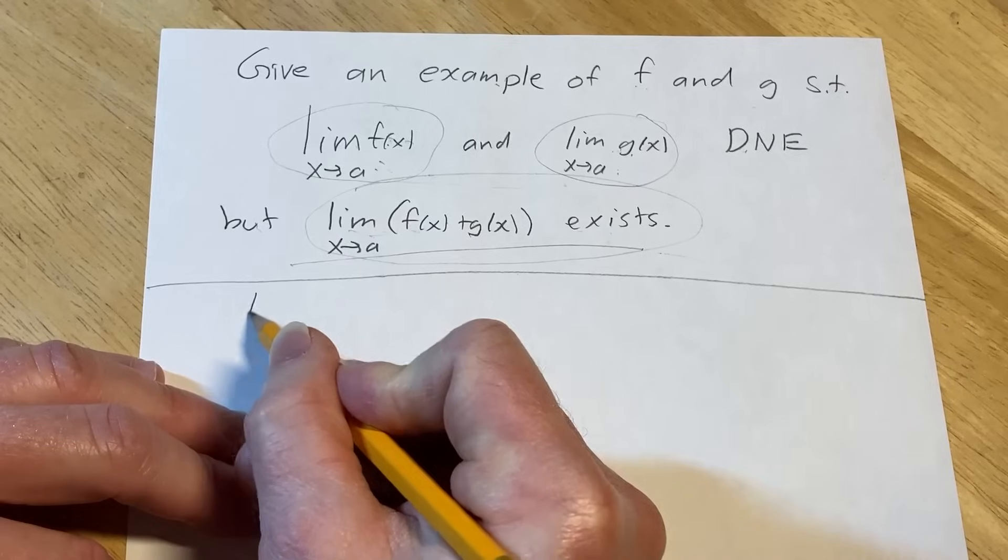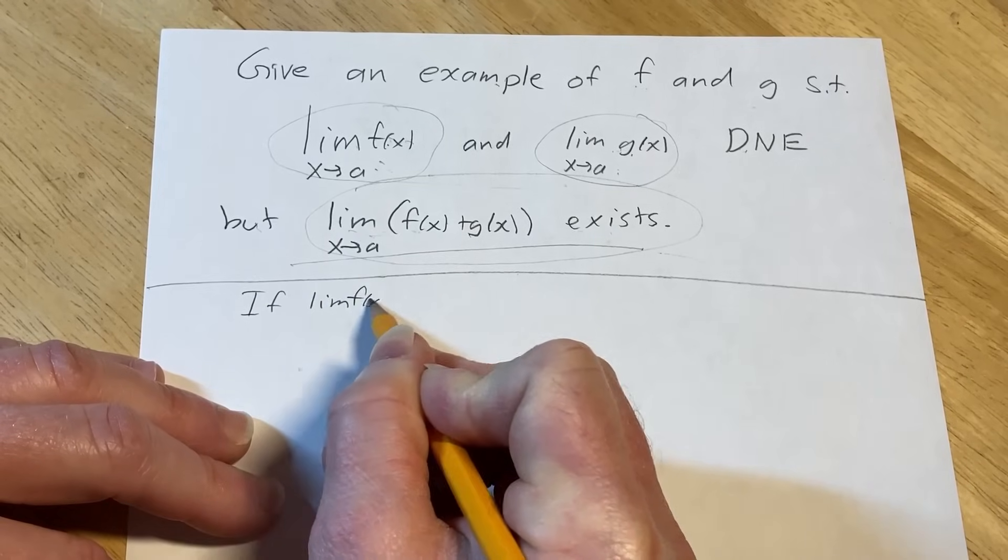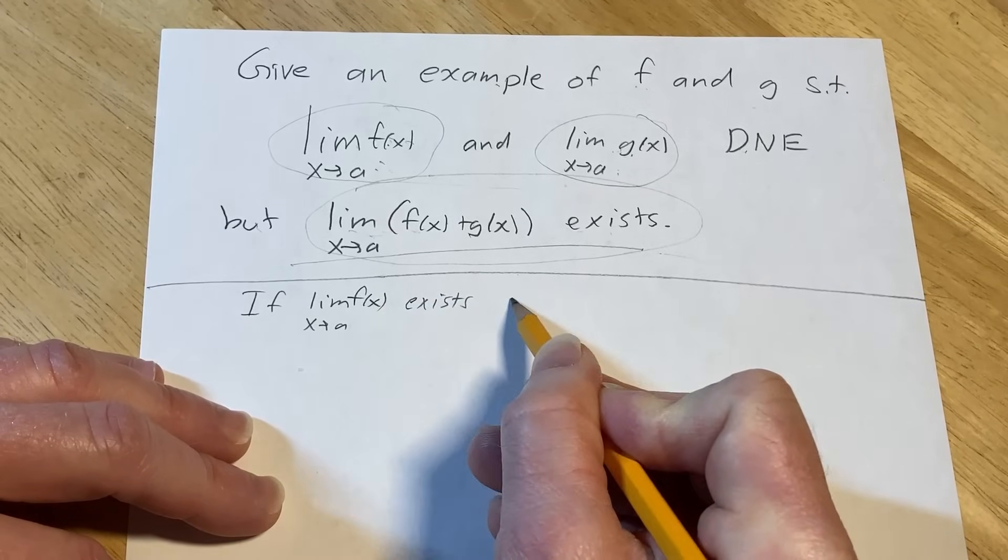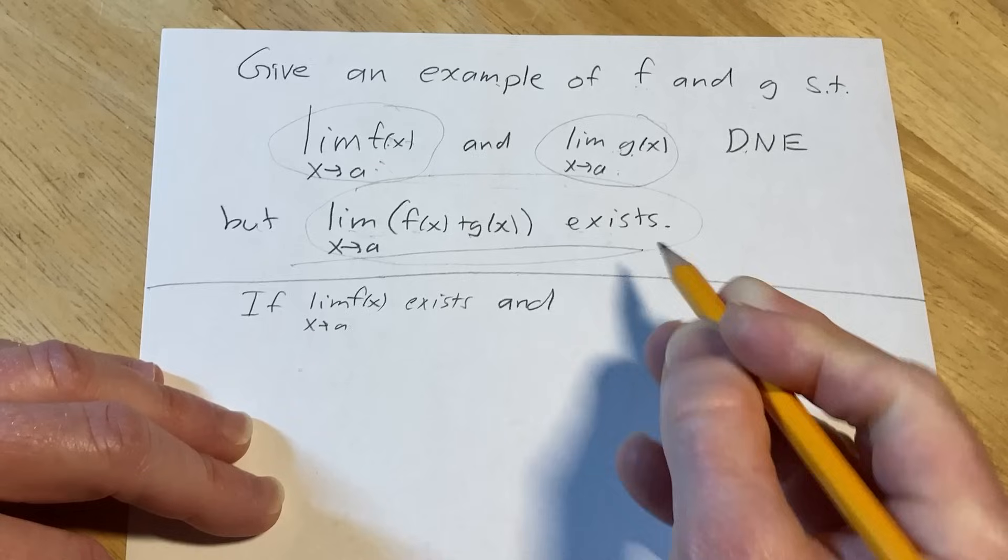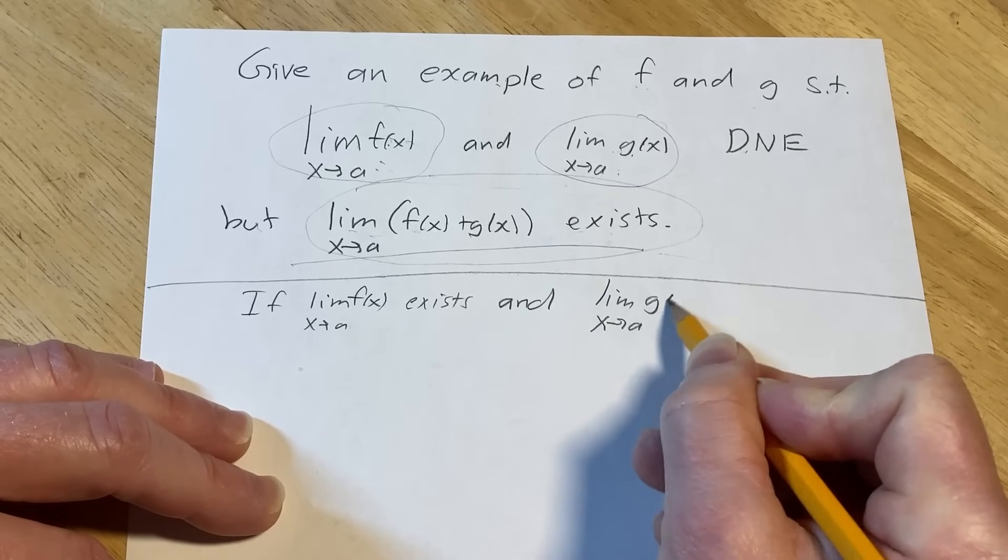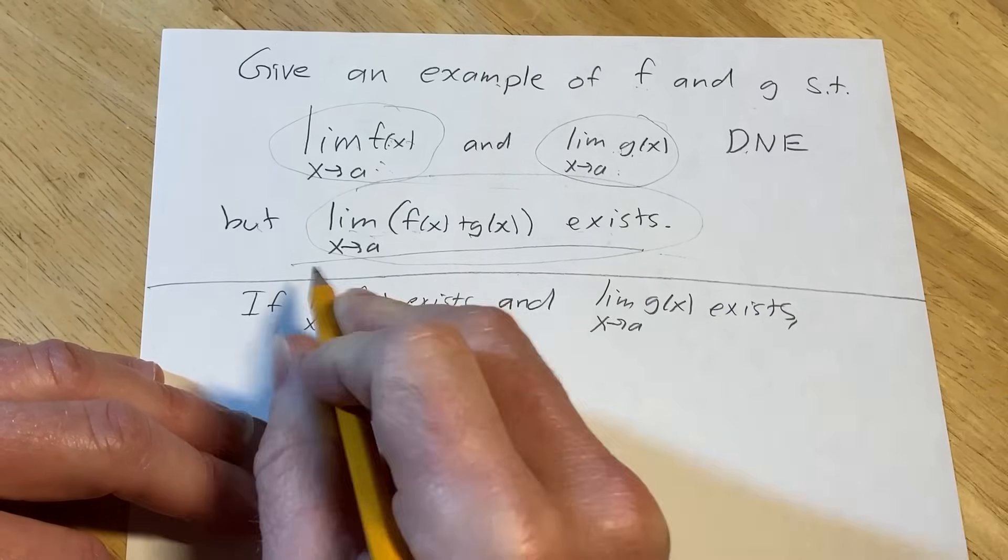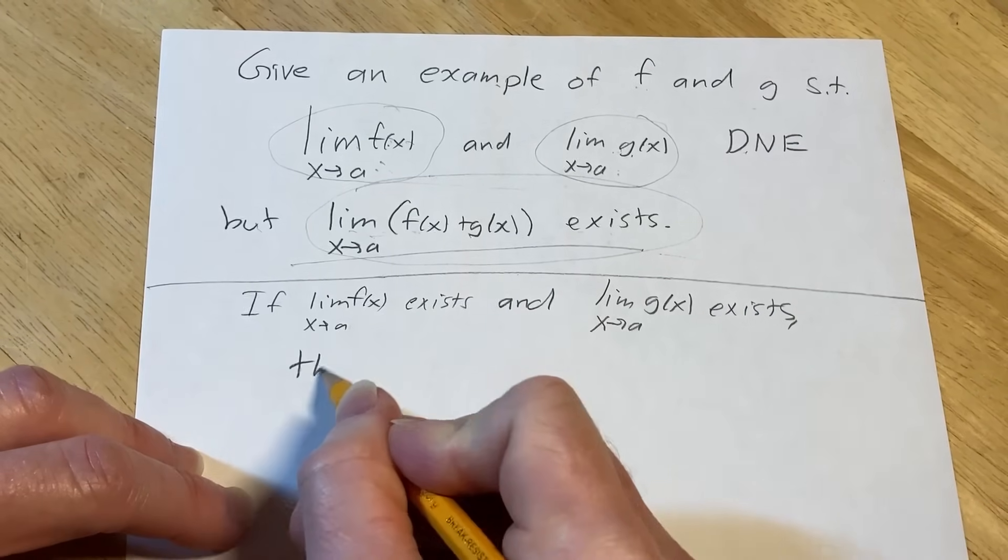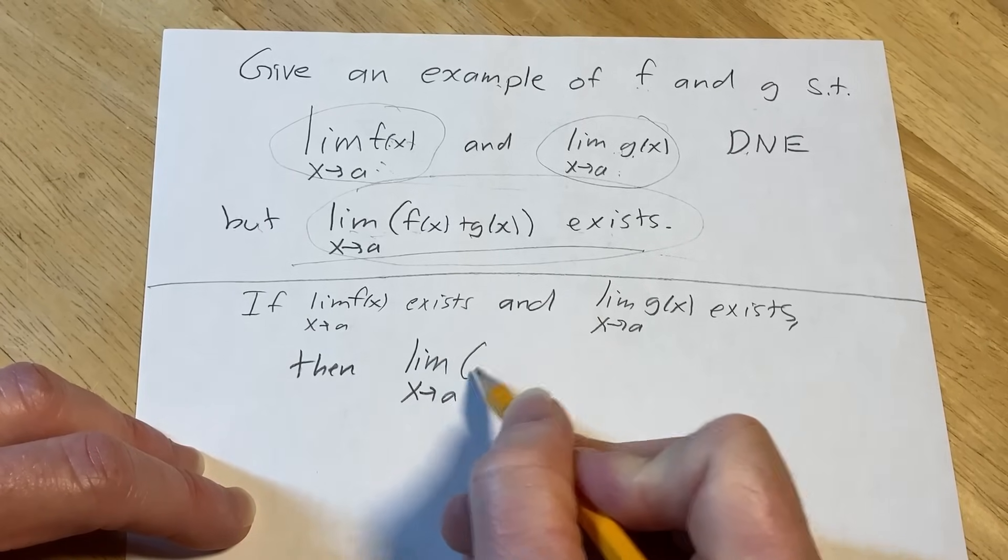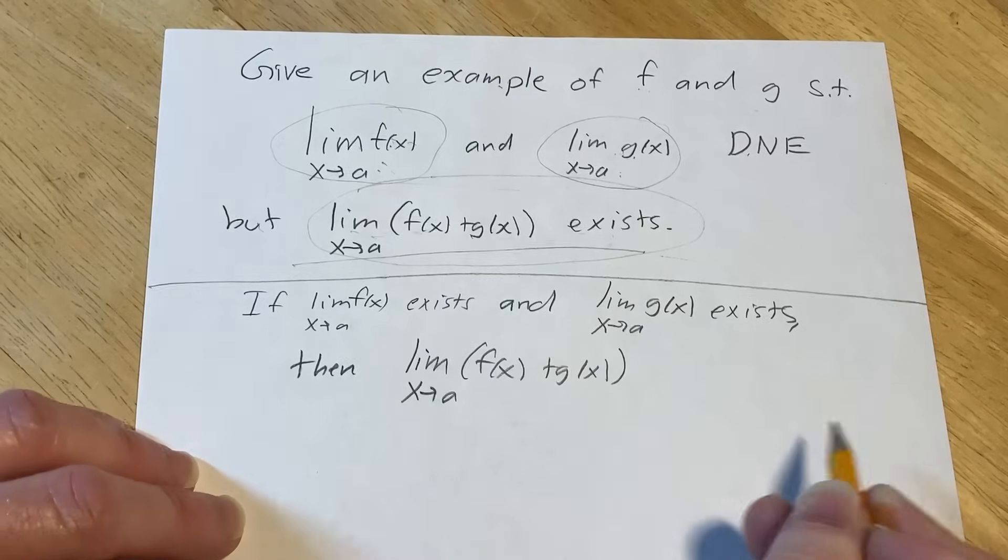In calculus, you learn that if this limit exists and this limit exists, so if the individual limits exist, then the sum of the limits also exists. It's one of the first things you learn when you study limits in Calc 1. It's one of the limit laws. If the individual limits exist, then the sum exists.